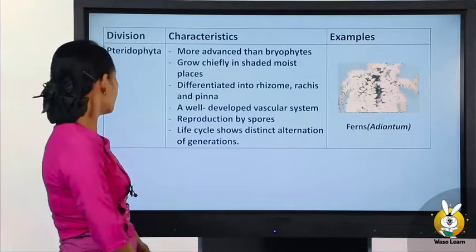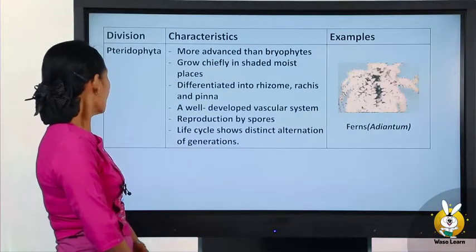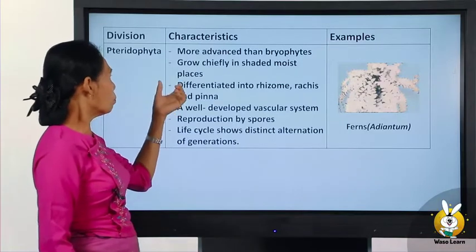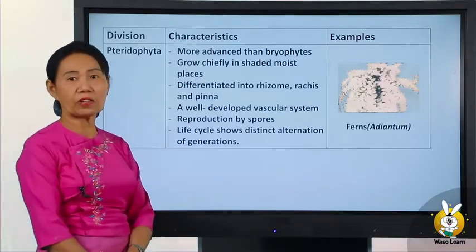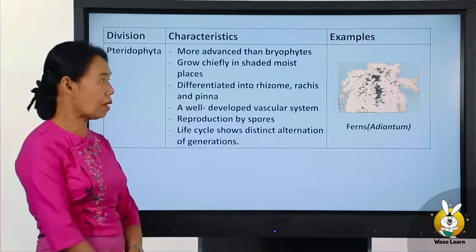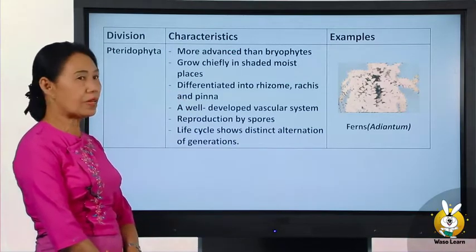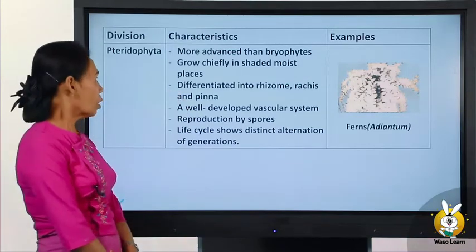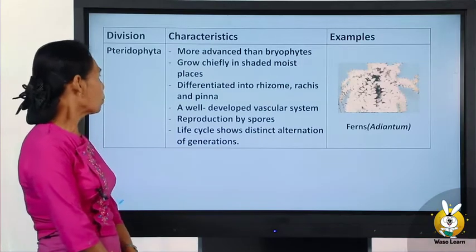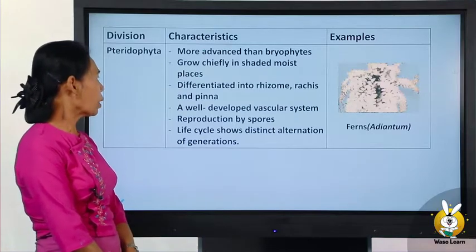Pteridophytes are more advanced than bryophytes. They grow in shaded, moist places. They are differentiated into rhizome, roots, and leaves.